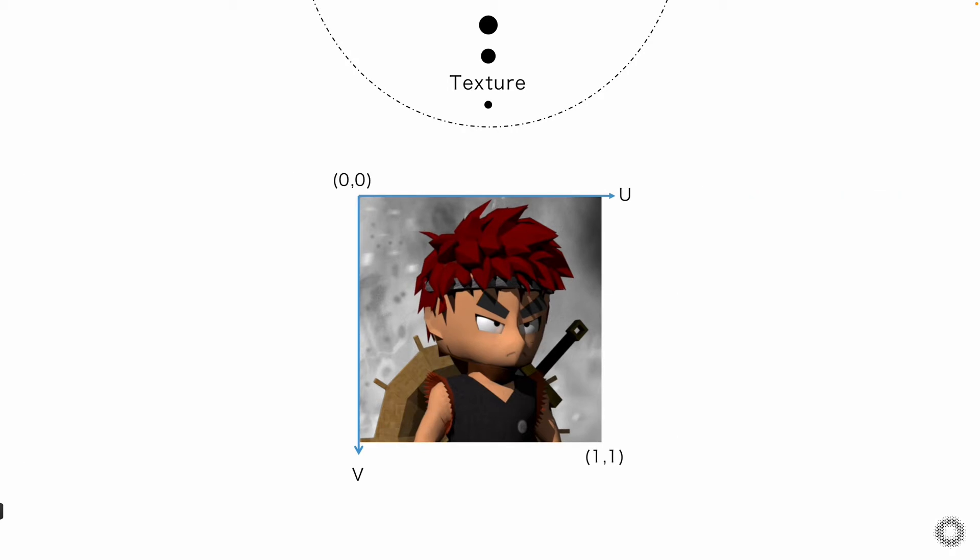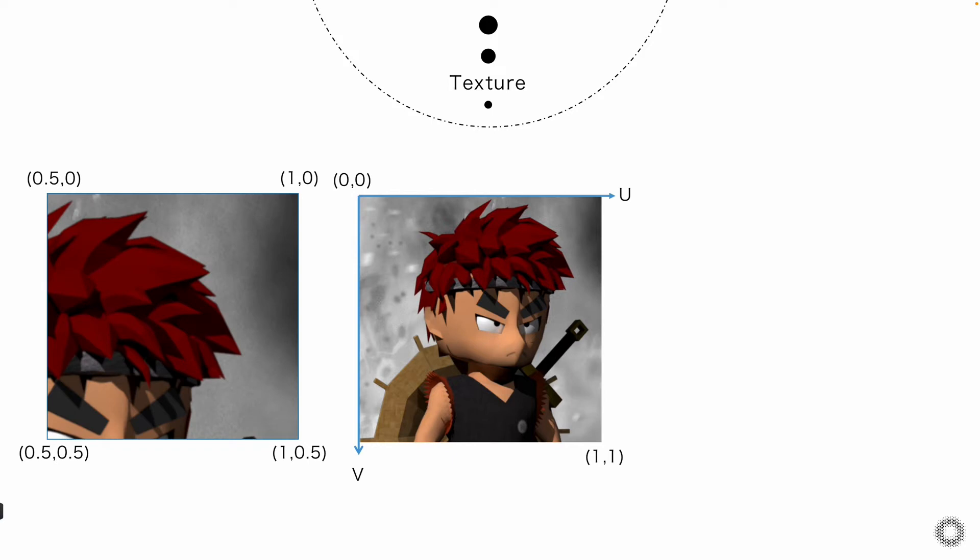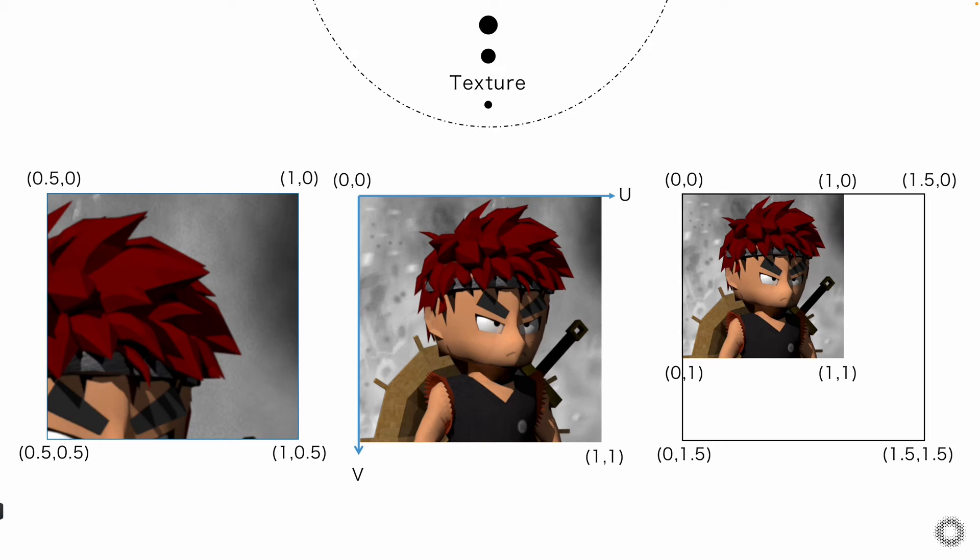Apart from this, we can also zoom in and out of the original texture through the UV coordinates. For example, this one, the coordinates are taken from one quarter of the upper right corner of the original texture. If we set the coordinates value over 1, then we can achieve the zoom out. Then here will be a problem. So what do we do with those blank areas?